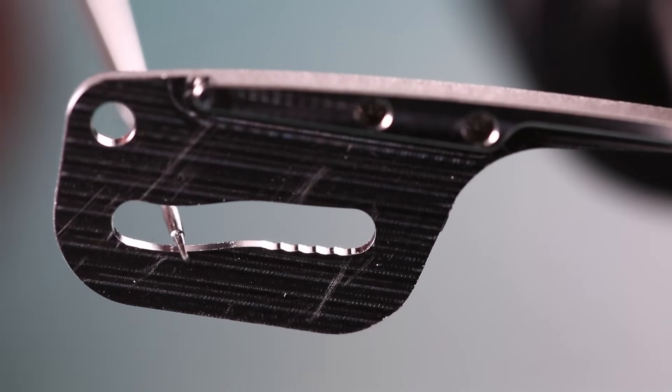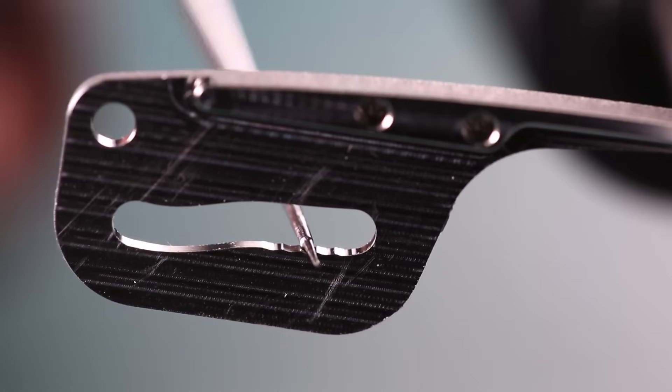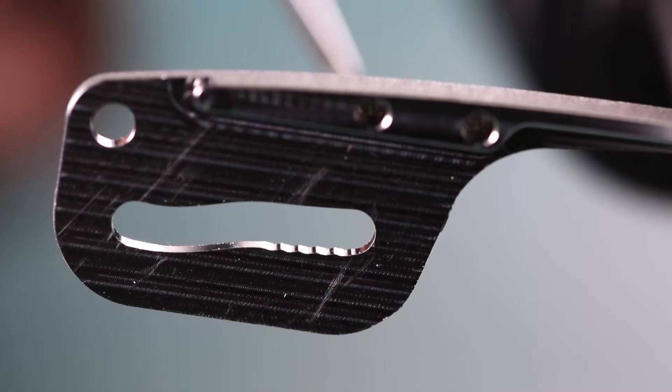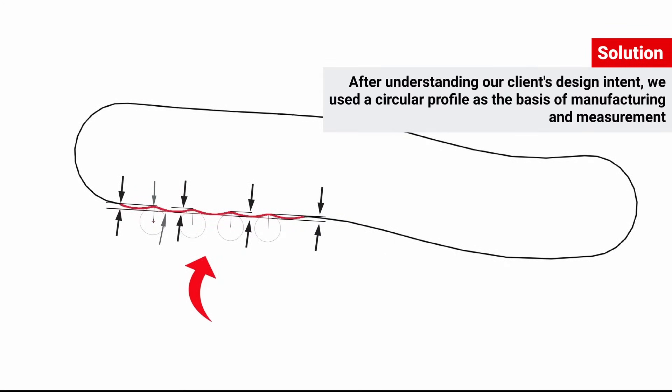We discovered, and again this is an example of the importance of understanding design intent, that an indexing pin was meant to ride along these grooves, so the bracket can click to different positions as it's rotated. To form these shapes accurately, it therefore made more sense to use a circular profile as the basis of manufacturing and measurement.